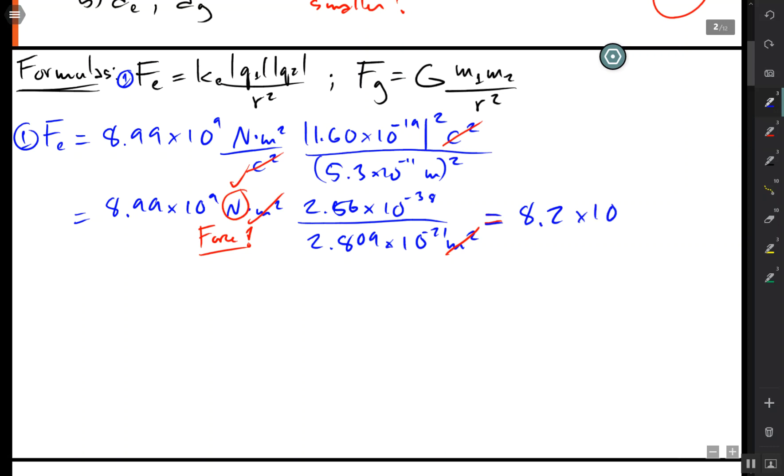The answer for this one, sticking with the significant figures given to us which was 2 sig figs, the 5.3, is 8.2 times 10 to negative 8. It's pretty small but you'll see in a little bit that it's actually not that bad.